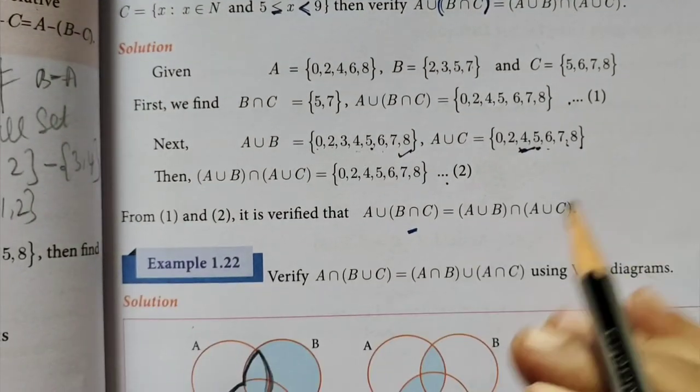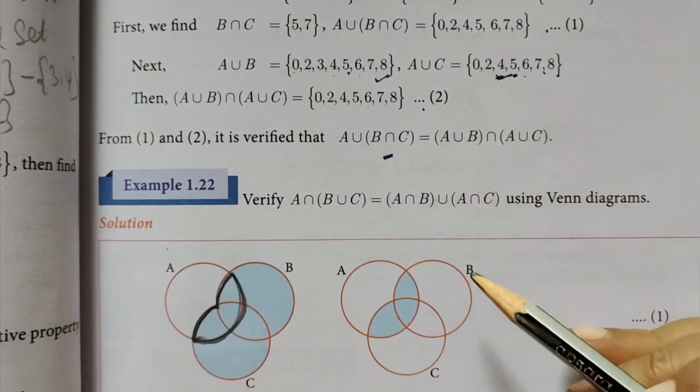1.22, 21 is over, now 2.2. You are given Venn Diagram.